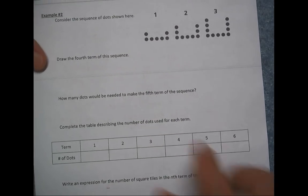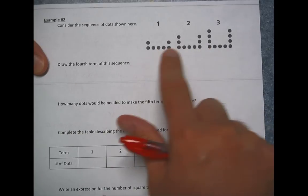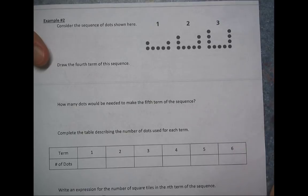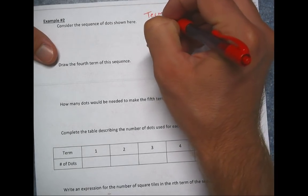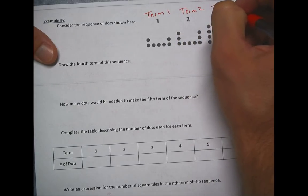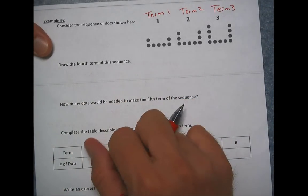Flip it over. And now we're going to talk about a sequence. So this is a sequence of dots. And they all have a certain number of dots here. And we talked about terms, term one, term two, term three. So we're going to call this term one, term two, term three. So it says, draw the fourth term in this sequence.